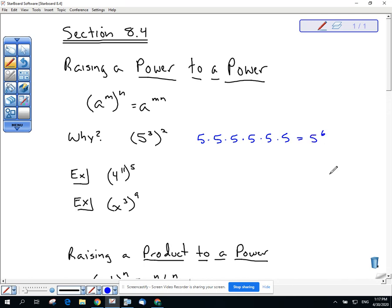Or you could apply a property from the previous lesson, 8.3. That would be like saying 5 to the 3rd times itself. 5 to the 3rd to the 2nd power is like saying 5 to the 3rd times itself. And we know then that since the bases are the same, we can add the exponents and you would still get 5 to the 6th. So what's the net result? Well, the net result is that we can multiply the powers.